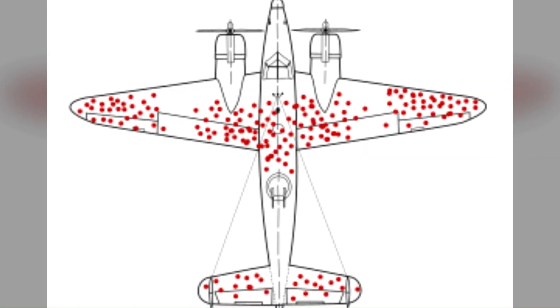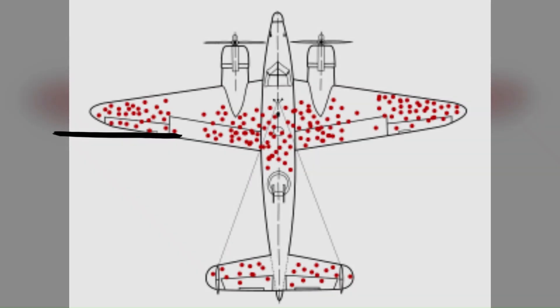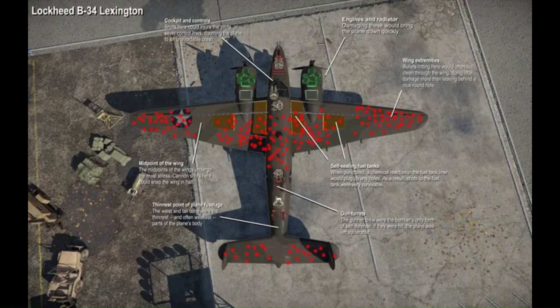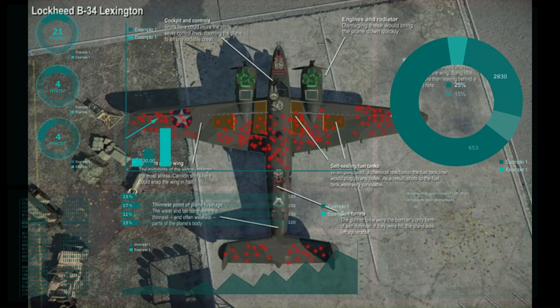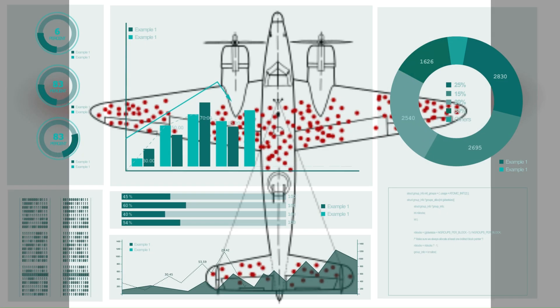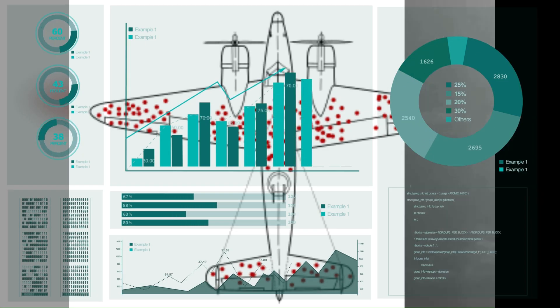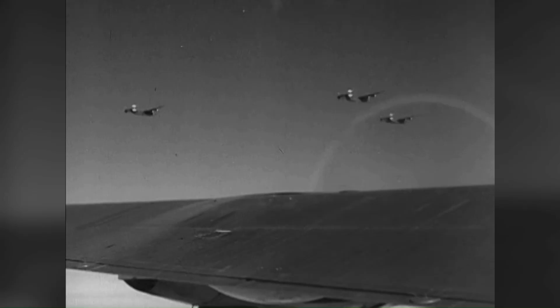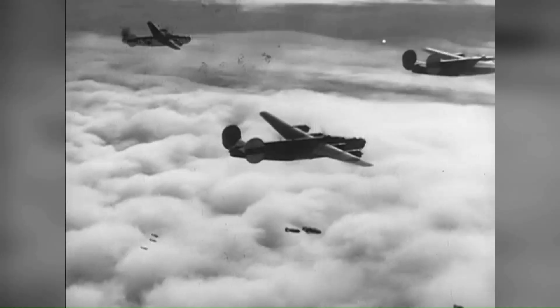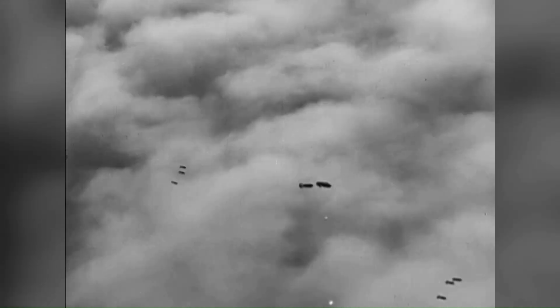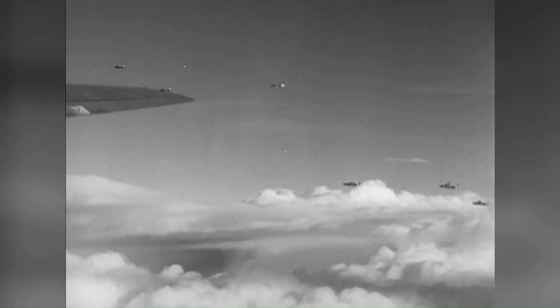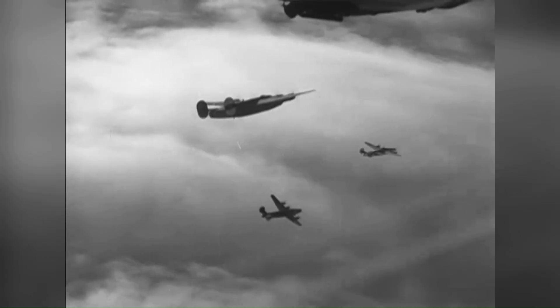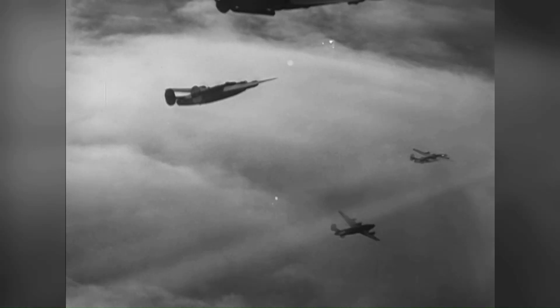At first glance, the image of a warplane riddled with red might not seem like much, but these dots represent bullet holes. The image itself originates from one of the most significant statistical studies conducted during World War II. It is a visual example of survivorship bias and how it transformed the way the Allies approached their air strategy, arguably saving thousands of lives and helping ensure Allied dominance in the skies.